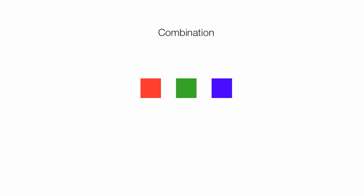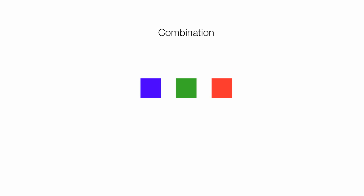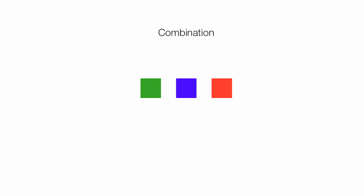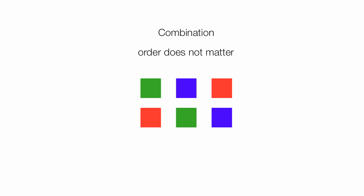Imagine I have three squares — red, green, and blue. For a combination, the order does not matter. If I have a green, blue, red square combination, and a red, green, blue square combination, it's still only one combination. For permutations, the order does matter.